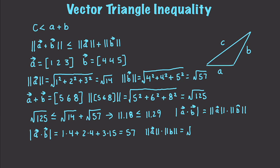And then we could also find magnitude of A times the magnitude of B, which is equal to the square root of 14 times the square root of 57, which is equal to the square root of 798, which is equal to approximately 28.2. And you can see that most definitely this value here is not equal to this value here.